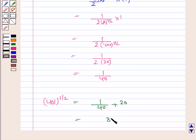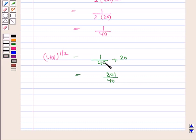So this is equal to 801 by 40 and this is equal to 20.025. Hence the approximate value of 401 to the power 1 by 2 is 20.025.